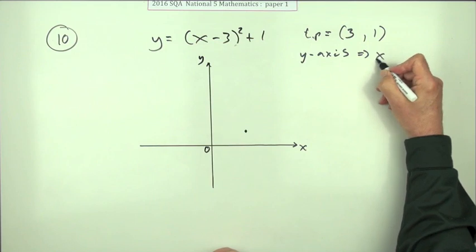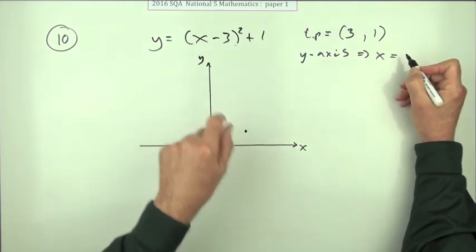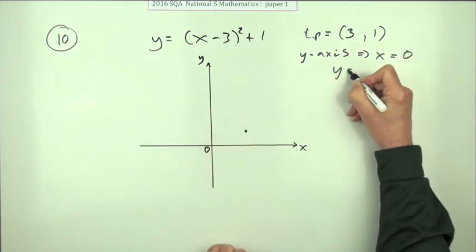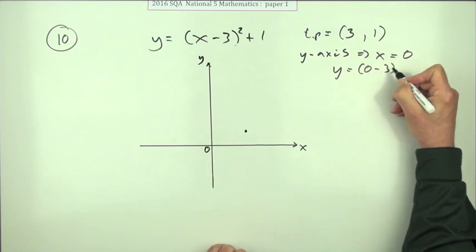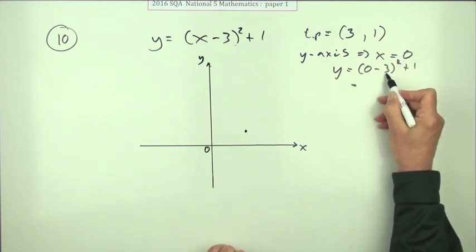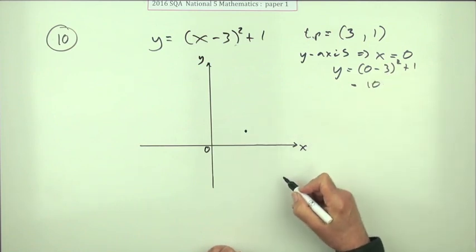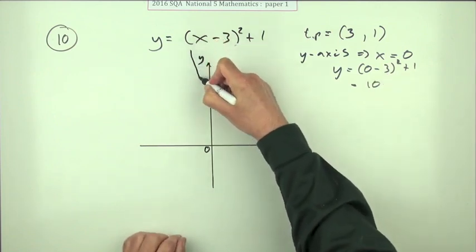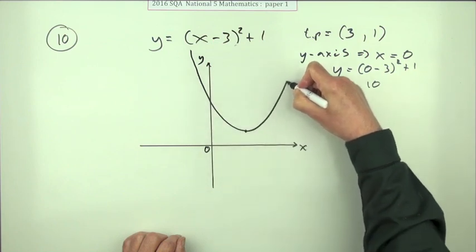But I know that on the y-axis, at any point of the y-axis, x is 0. So y would be (0-3)² + 1. That's 3 squared is 9, plus 1 is 10. So it cuts the y-axis at 10.